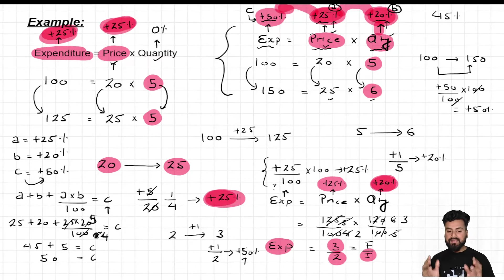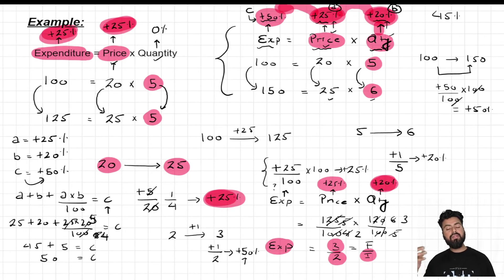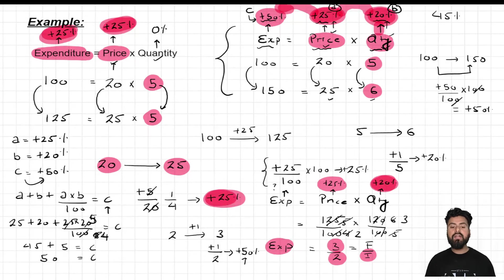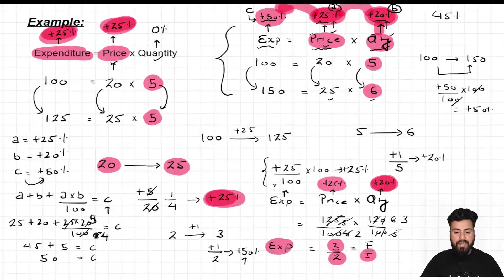So I hope with this example, you are able to understand how to apply the concept of Successive Percentage Change in a formula where the product of 2 or more than 2 variables gives the effect in terms of a third variable. Don't worry, we'll solve more questions based on the second application. With this, we have come to an end of this lecture. I hope things were easy to follow. If not, please use the comment box to ask your queries. Thank you and have a nice day.